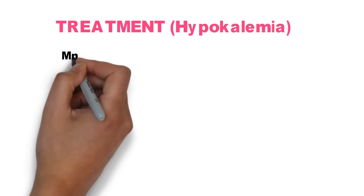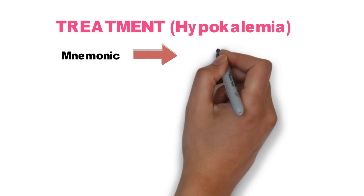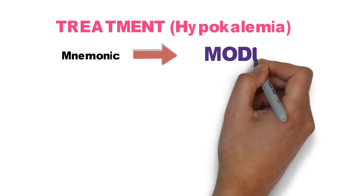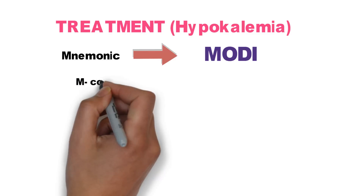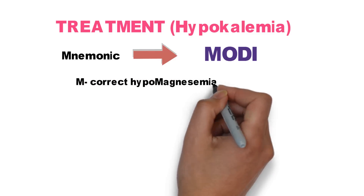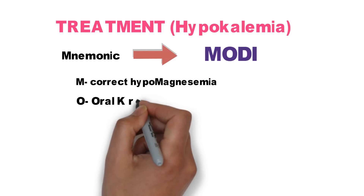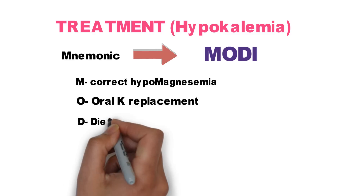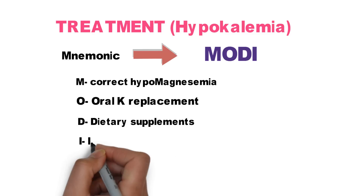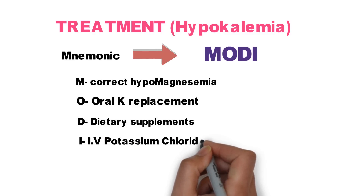Now the treatment for hypokalemia. As this has 'kalemia', remember it as kaladhan — black money. The treatment is remembered by the mnemonic MODI: M stands for correct hypomagnesemia if present, O for oral potassium supplement, D for dietary supplements, I for IV potassium chloride.